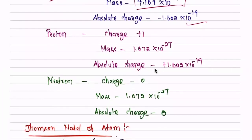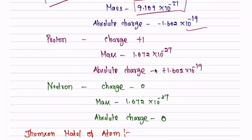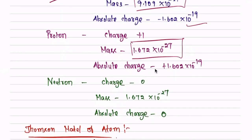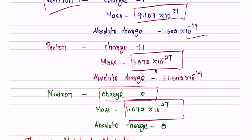The proton has a charge of plus 1. The mass of the proton is 1.672 times 10 to the power of minus 27. The absolute charge of the proton is 1.602 times 10 to the power of minus 19. The neutron has an absolute charge of 0. The mass of the neutron is 1.672 times 10 to the power of minus 27. The proton and neutron have the same mass.